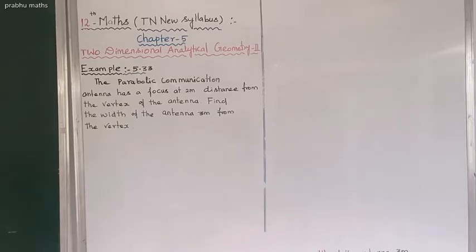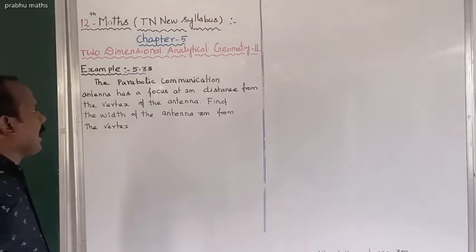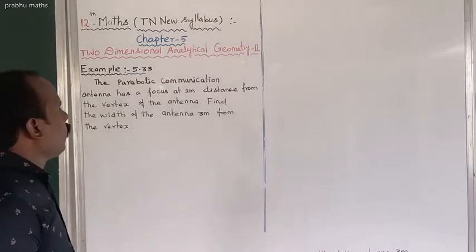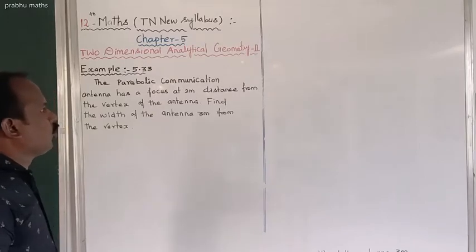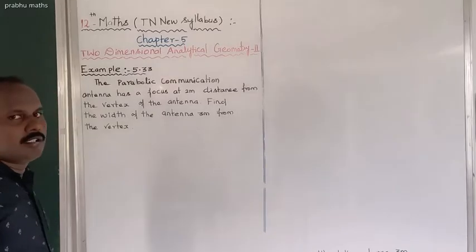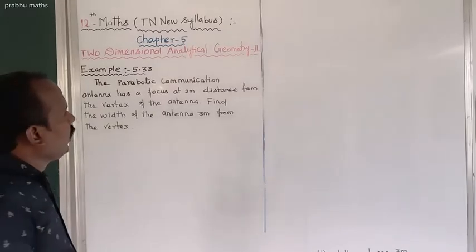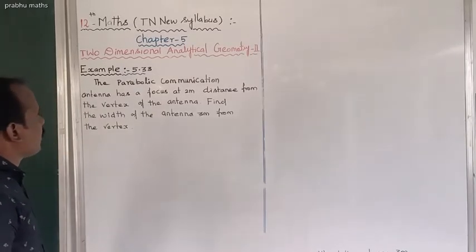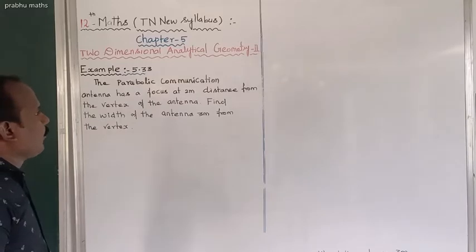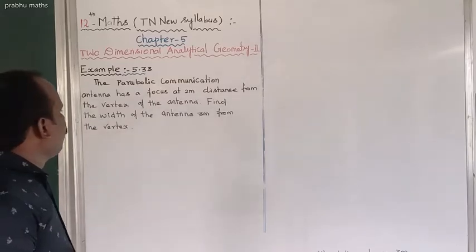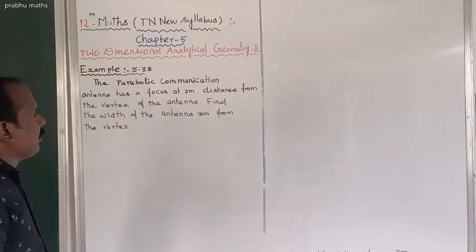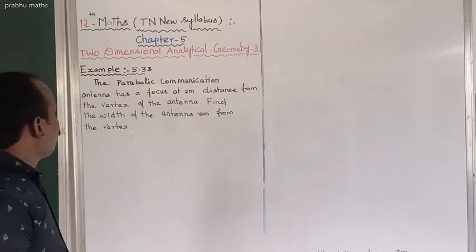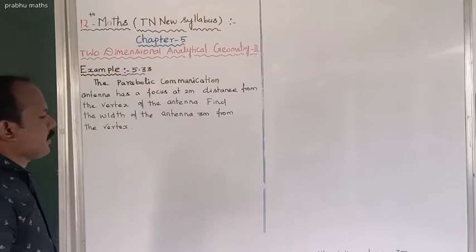Exam 5.33: The parabolic communication antenna has its focus at 2 meters. Find the distance from the vertex of the antenna and the width of the antenna 3 meters from the vertex.